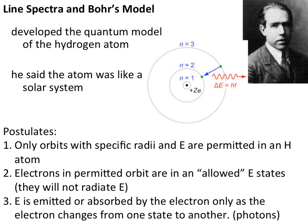The explanation of the line spectra, which is an observable phenomenon, is directly connected with Bohr's model. Bohr created a quantum model for the hydrogen atom. He postulated that the atom was basically shaped like a solar system, and that only orbits — pathways with specific radii and energy — are permitted in the hydrogen atom.